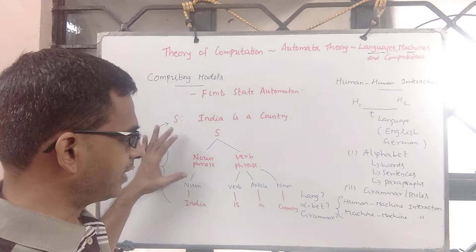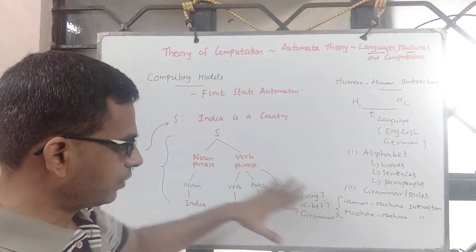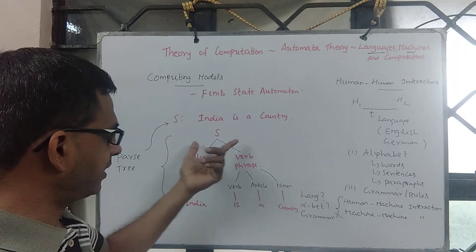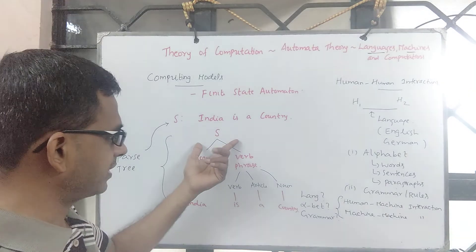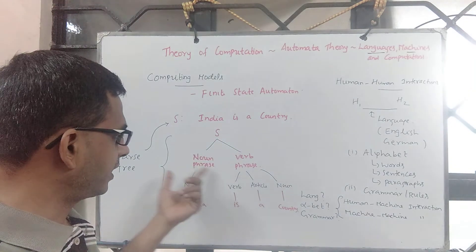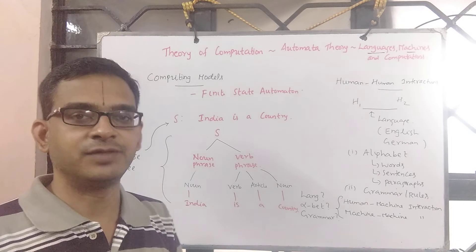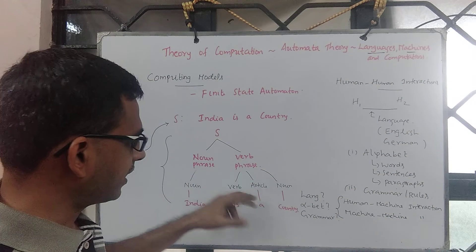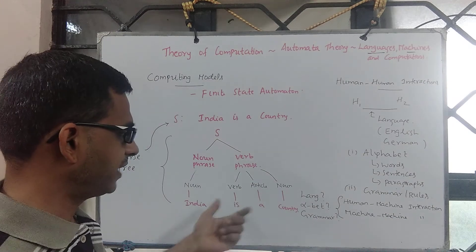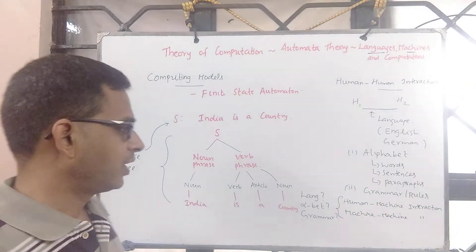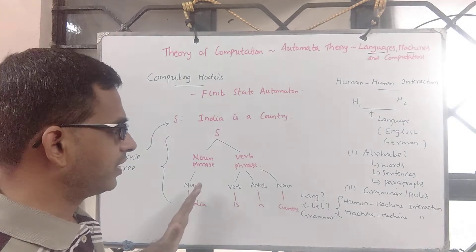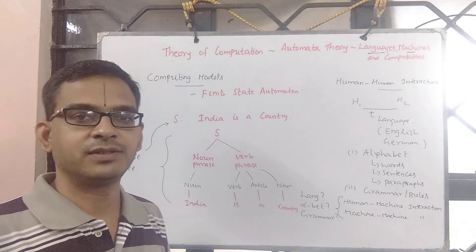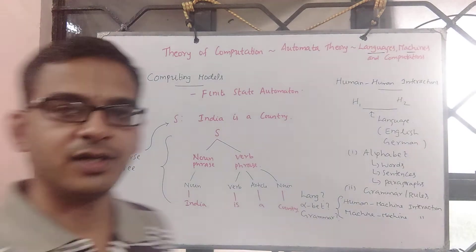Given an arbitrary sentence or statement following this rule, we do parsing. Our rule says you look at any sentence or a statement, you can decompose them into noun phrase and verb phrase. Subsequently you get the components like verb, article, noun and all that. On the similar line, can we define the framework for finite state machines? That's precisely our focus.